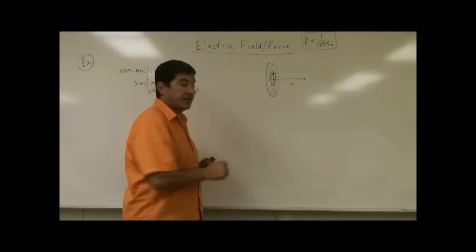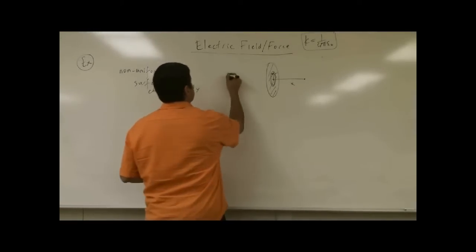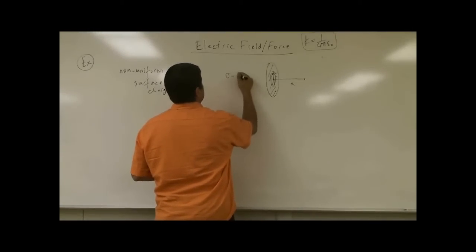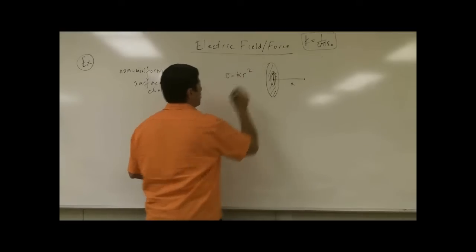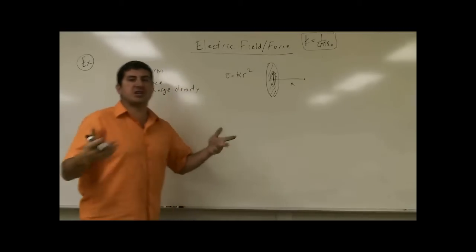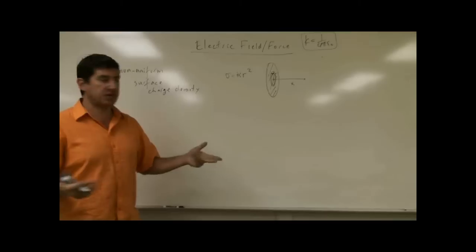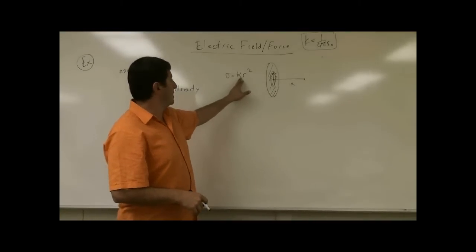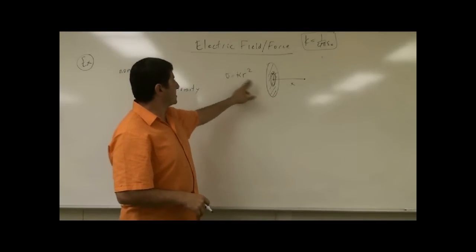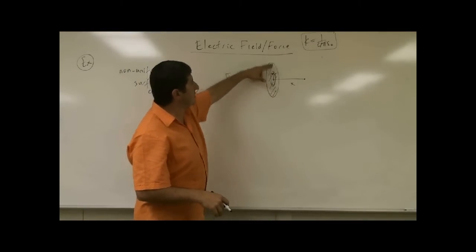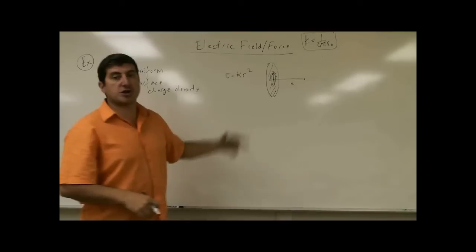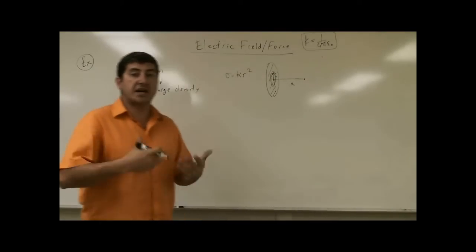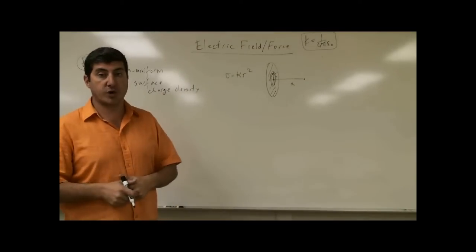Let's come to the plate again and say the surface charge density sigma varies as kappa r squared. Kappa is some constant, and this says that as the distance r gets bigger, the surface charge density is proportionally increasing as the distance squared.